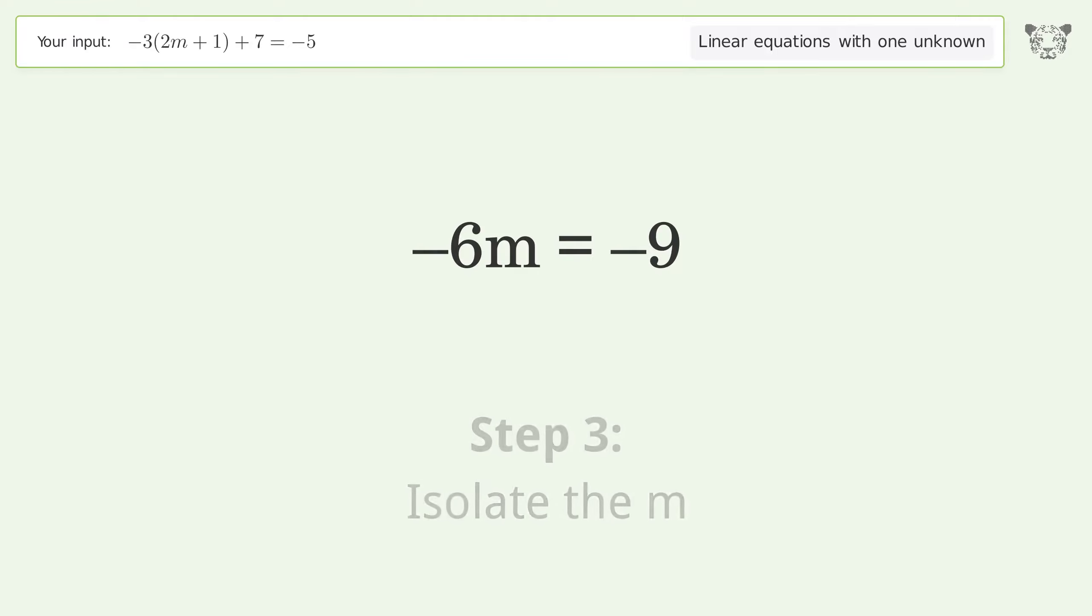Isolate the m. Divide both sides by negative 6. Cancel out the negatives. Simplify the fraction.